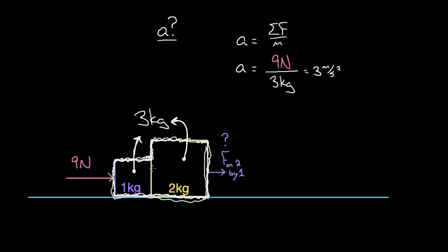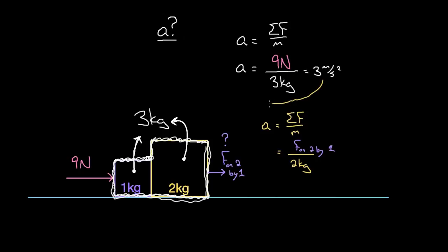We'll have to focus on the internal structure and consider the one and two as separate boxes. Applying Newton's second law to the two kilogram mass alone: the only horizontal force on it is the force exerted by the one kilogram box — the nine newtons is applied directly to the one, not the two. Using the acceleration we already found — three meters per second squared — we find that the force exerted on the two by the one is six newtons.